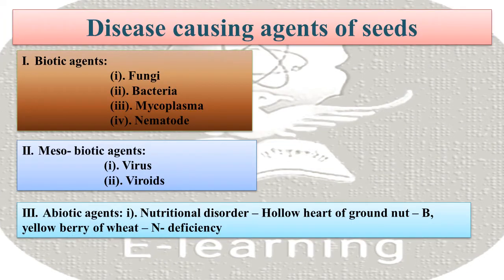The various agents which attack seeds and cause various diseases are classified on the basis of their living nature. Disease-causing agents of seeds are as follows: first, biotic agents — first, fungi; second, bacteria; third, mycoplasma; and fourth, nematodes. Next, mesobiotic agents: viruses and viroids.